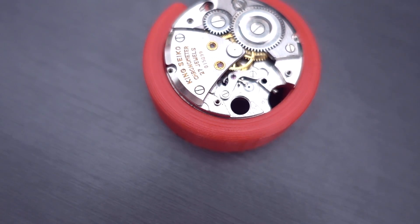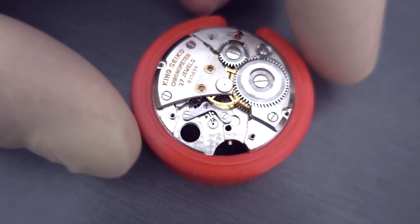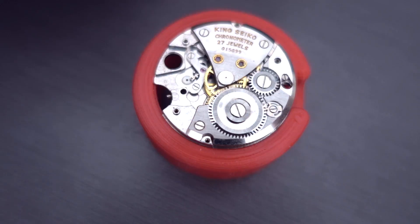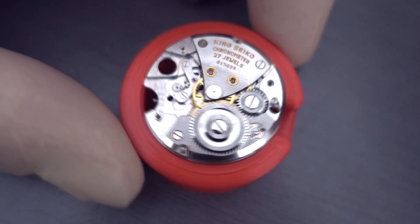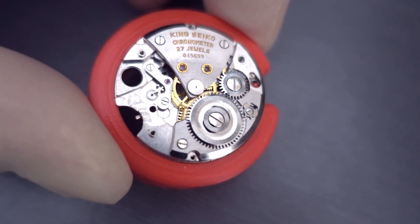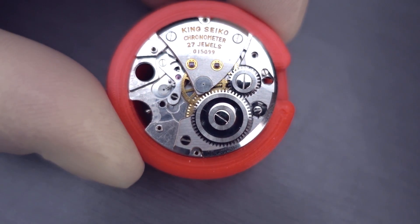And we're just removing that there. And you can see there the pallet cock and the pallet fork. And there's a little bit of pearlage on the plate. Not very much, just a little bit. Only where it's visible.